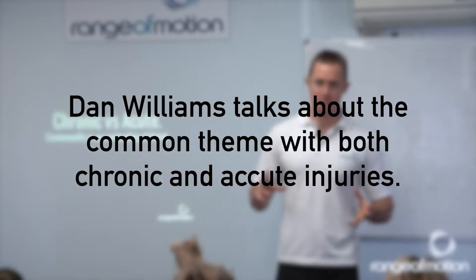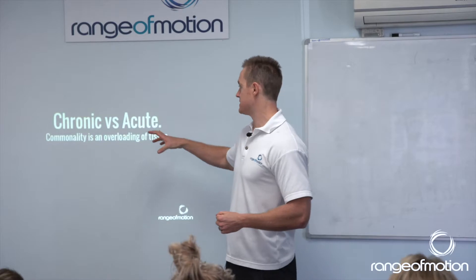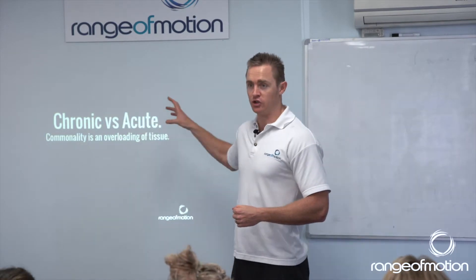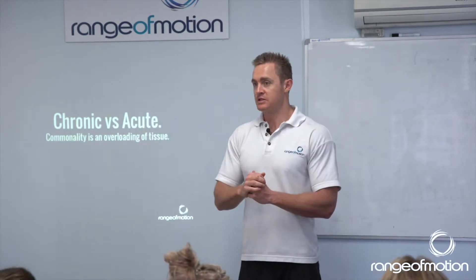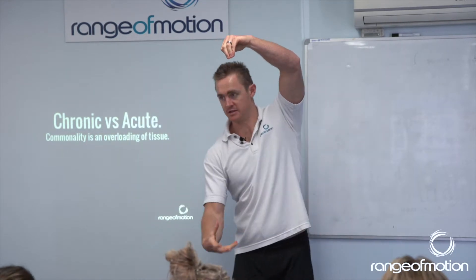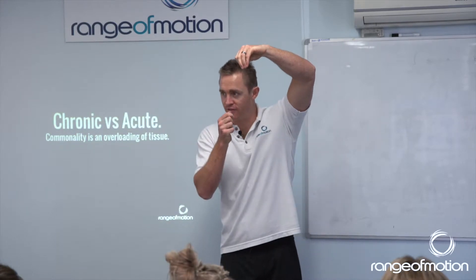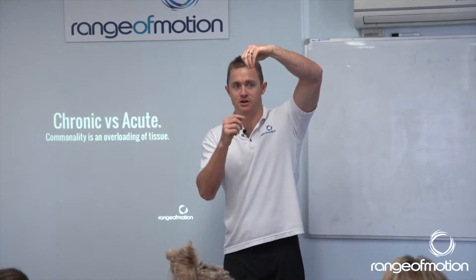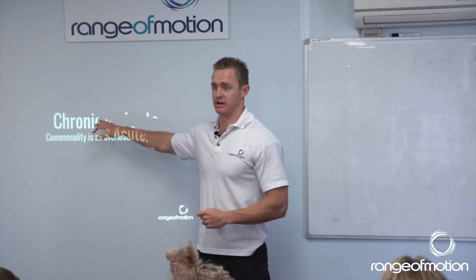Broadly speaking, there are two different types of injuries. Chronic injuries are things that take a long time to develop. Acute injuries are one-off events. Imagine you've got a rope with a weight hanging from the end of it, and you get a nail file and slowly file through the fibres of that rope, one fibre at a time, until it snaps. That's a chronic injury.